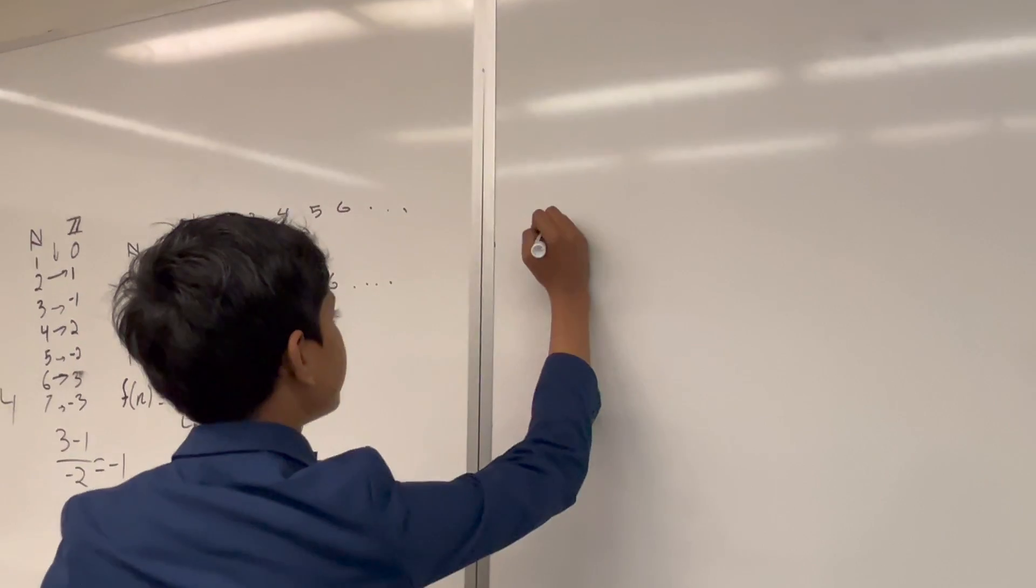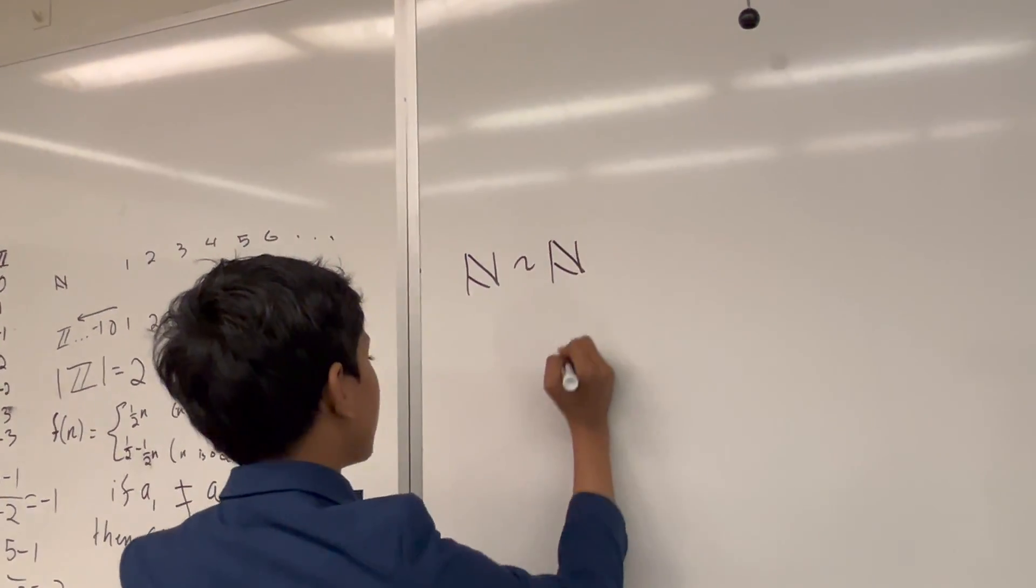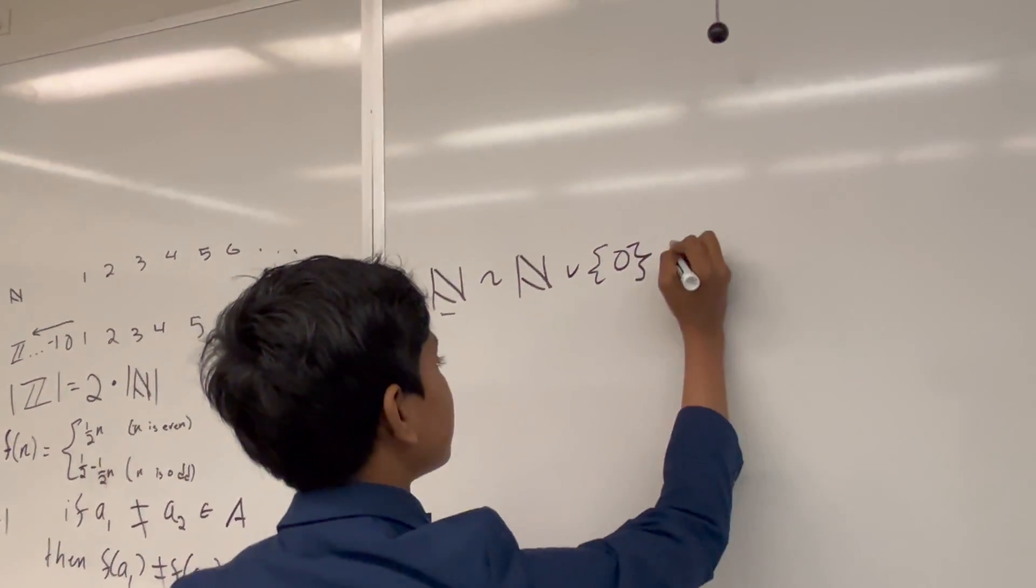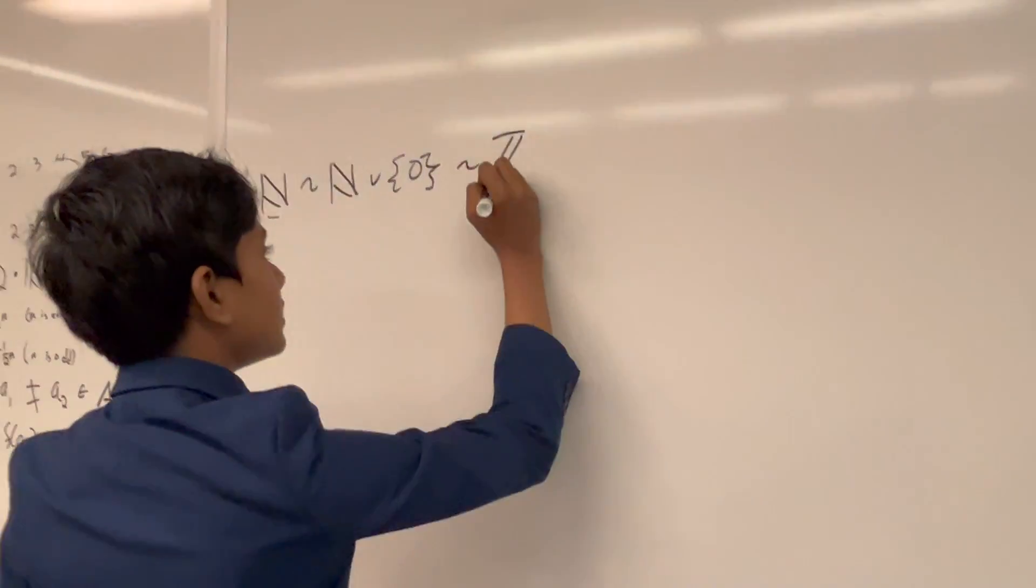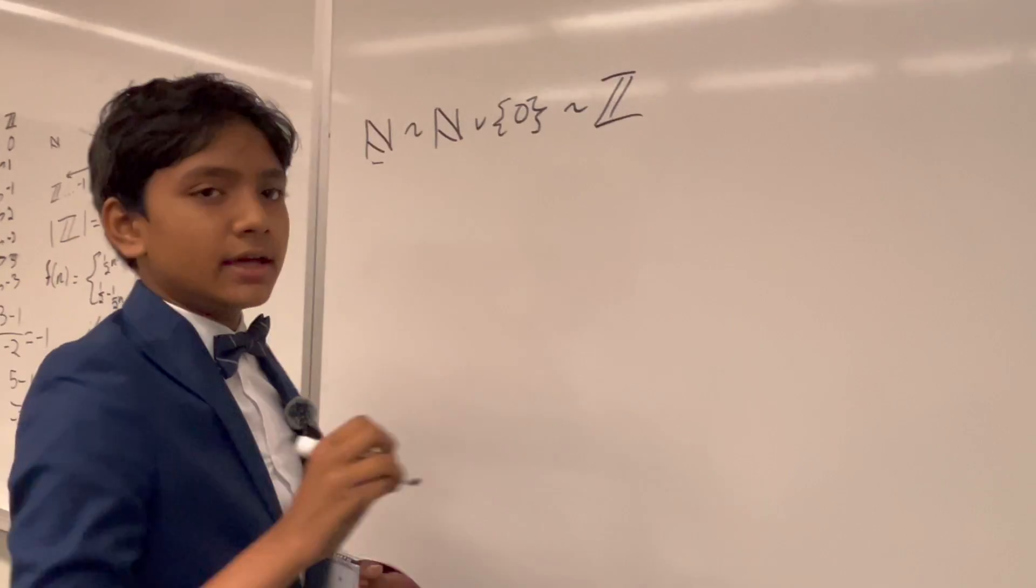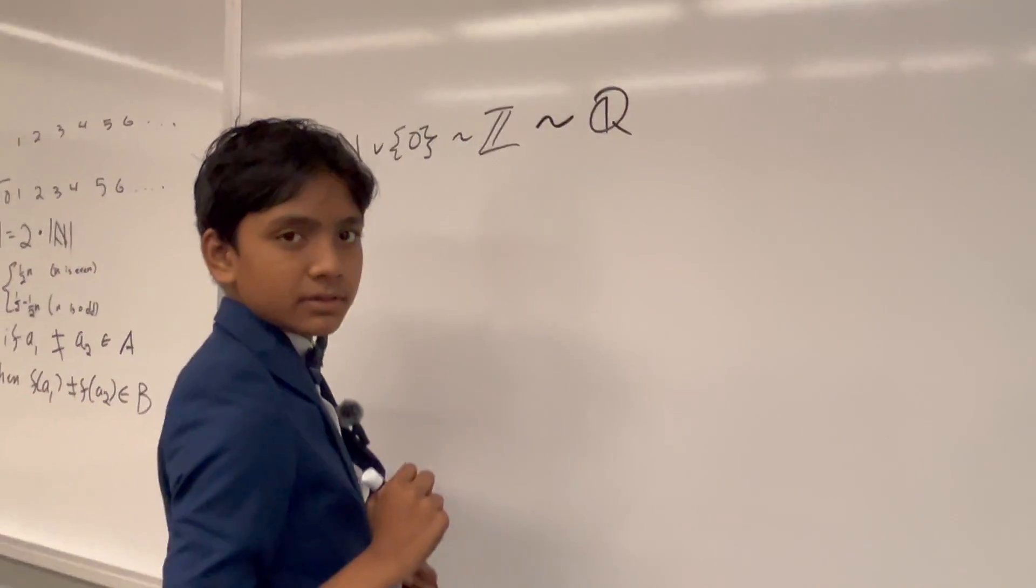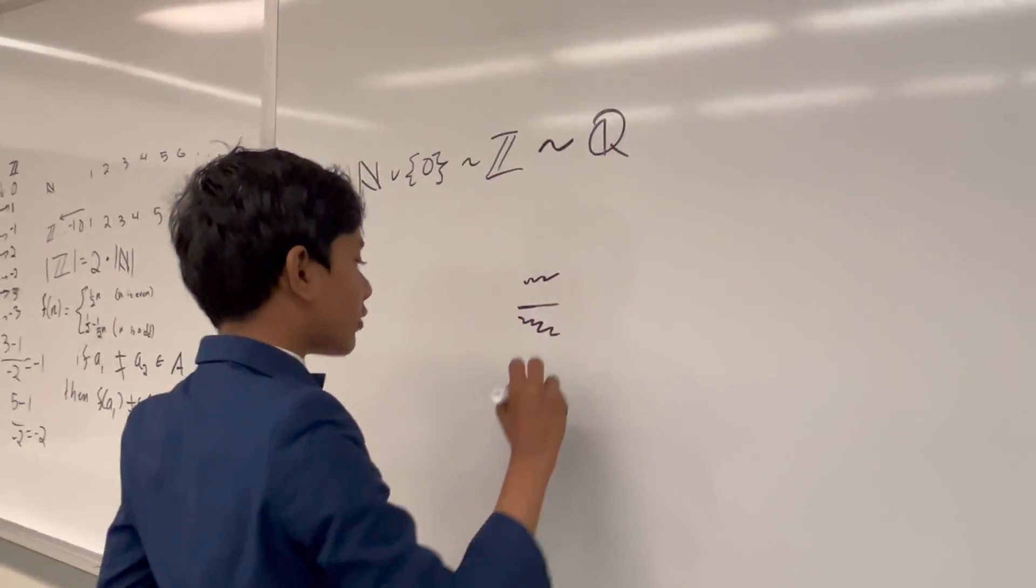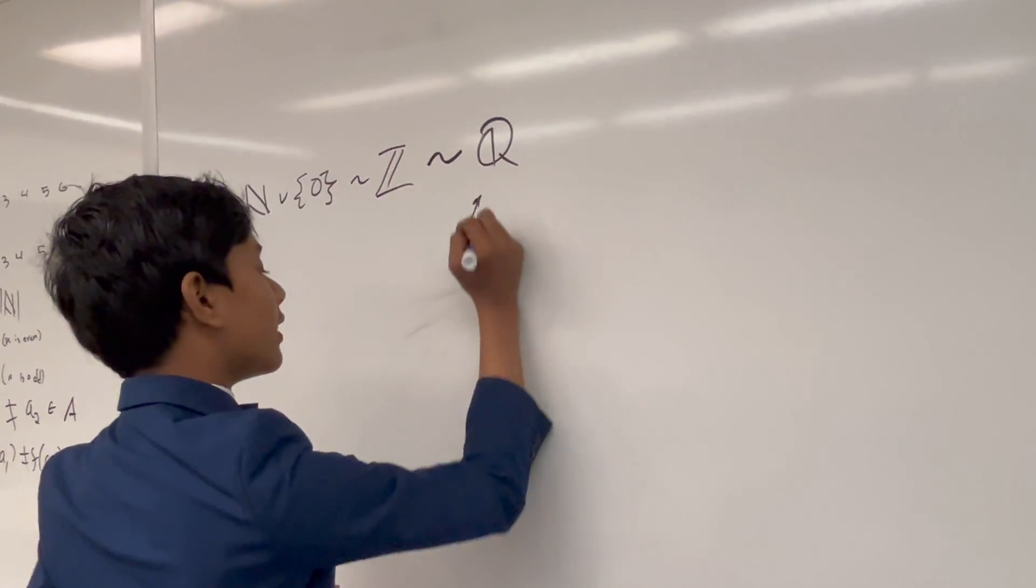So, now, we've shown that the naturals are congruent. Well, they have the same cardinality as the naturals union zero, and those have the same cardinality as the integers. Now, let me tell you something crazy. They also have the same cardinality as the rationals. That's crazy, right? The rationals are literally two integers on top of one another. It'd be like the integer squared or something. And we'll actually get to that next time.